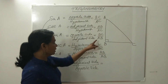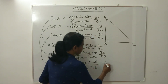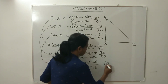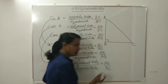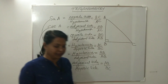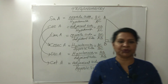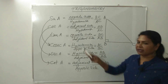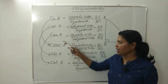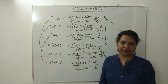There are only six trigonometric ratios. The cotangent of angle A — cot A — is AB divided by BC. The six trigonometric ratios are: sine, cosine, tangent, cosecant, secant, and cotangent.